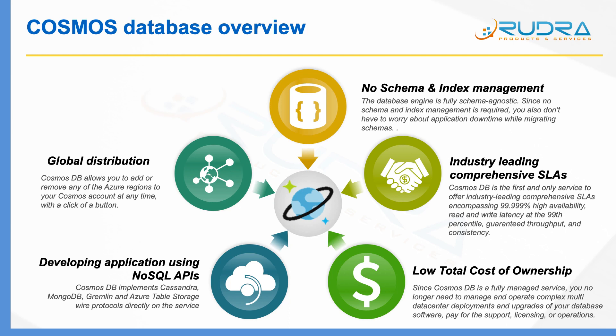The next big advantage of Cosmos database is industry-leading comprehensive SLAs. Cosmos DB is the first and only service to offer comprehensive SLAs encompassing 99.999% high availability, and read and write latency at the 99th percentile, guaranteed throughput and consistency. Microsoft guarantees high availability, latency, throughput, and consistency. Because this database is globally distributed, consistency is very important, and I will discuss it in more detail in the subsequent part of this lecture.